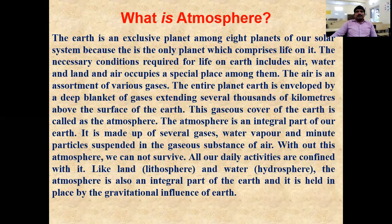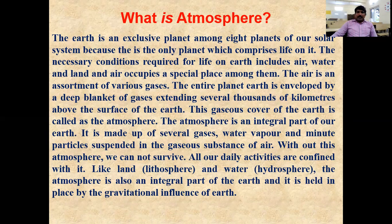Earth is an exclusive planet among the eight planets of our solar system because it is the only planet which comprises life on it. The necessary conditions required for life on Earth include air, water, and land. Here, air occupies a special place among these. The air is an assortment of various gases. The entire planet Earth is enveloped by a deep blanket of gases extending several thousands of kilometers above the surface of the Earth, and this gas cover of the Earth is called the atmosphere.